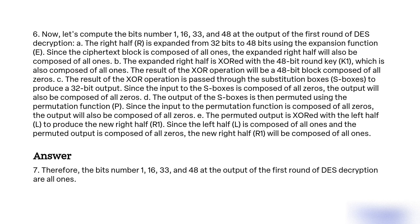Therefore, the bits number 1, 16, 33, and 48 at the output of the first round of DES decryption are all ones.